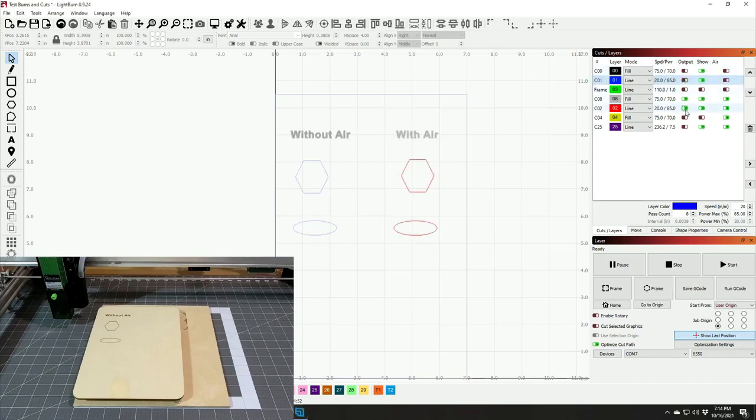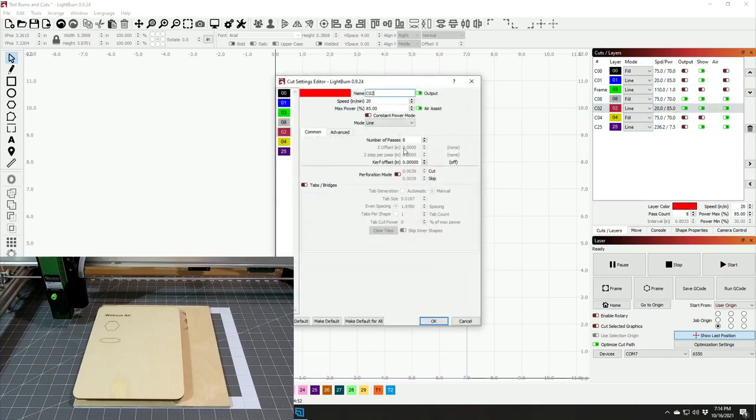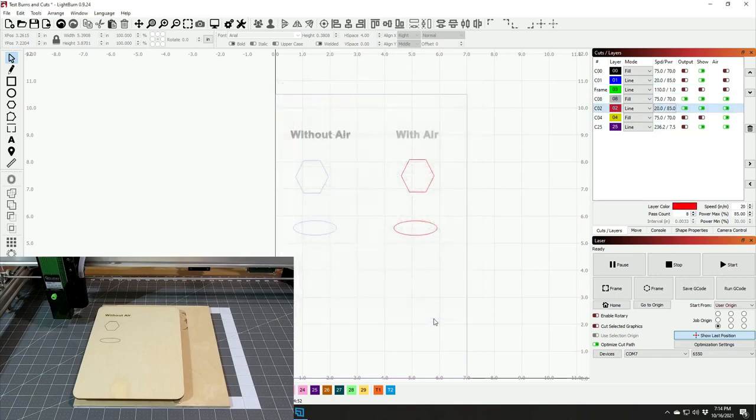I'm going to go ahead and turn these off, turn these on, same thing: 75 speed, 70 power, 25, 8 passes. I'm going to go ahead and turn on the air assist and get started.